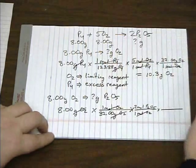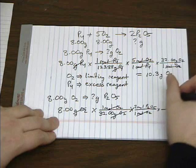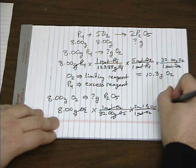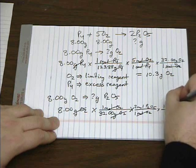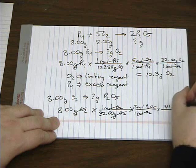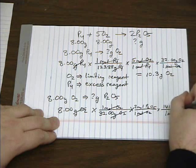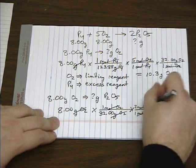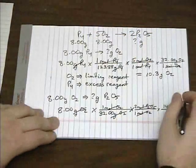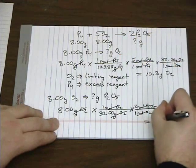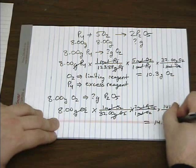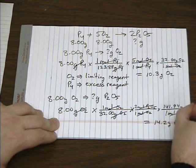And we can convert moles to grams once again by using the molar mass of the product, which is 141.94 grams per mole. So that gives us 14.2 grams of P2O5.